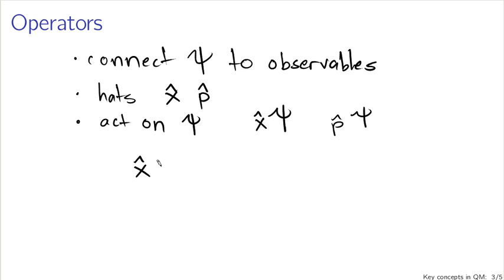Now, we'll talk about this in more detail later, but x hat, the operator, can be thought of as just multiplying by x. So if I have psi as a function of x, x hat psi is just going to be x times psi of x. So if psi was a polynomial, you could multiply x by that polynomial.